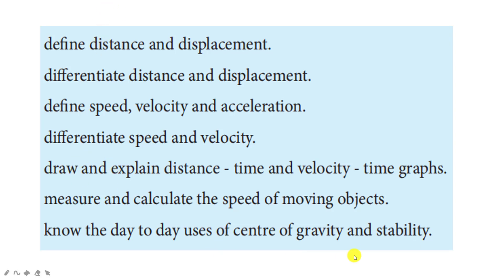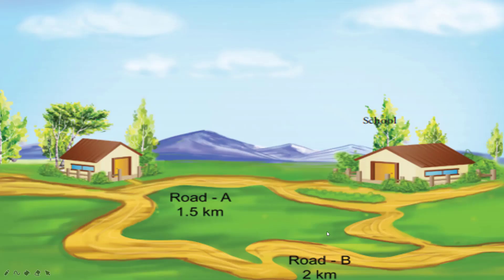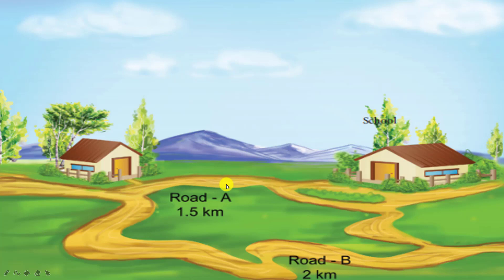Let us enter into the lesson. Look at this picture — Kavitha can reach her school in two different ways. Will you help her choose the closest path? Can you tell by choosing which path she could reach the school early? This is her school and this is her house. Look at road A — she has to travel road A and can complete a distance of 1.5 km. But if she chooses road B, she has to travel 2 km.